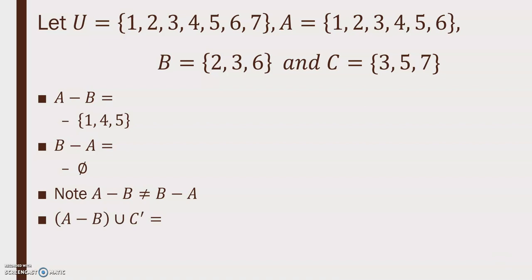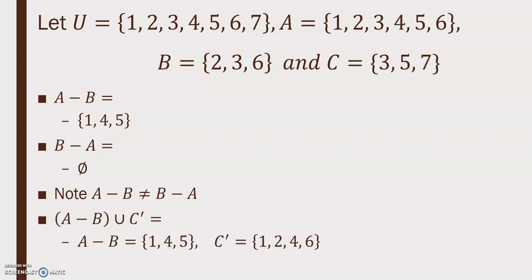Find (A minus B) union C'. We already have A minus B = {1, 4, 5}. C' = {1, 2, 4, 6}. Union those sets to get {1, 2, 4, 5, 6}.